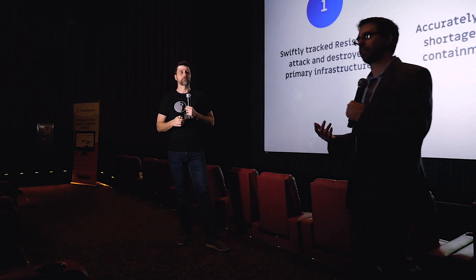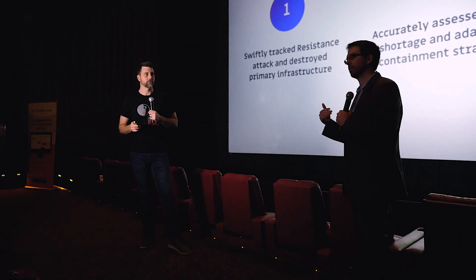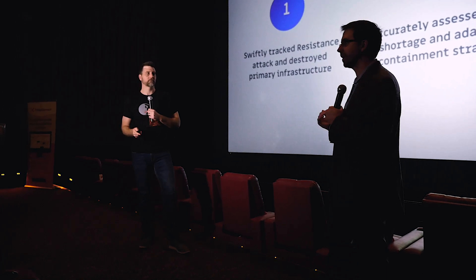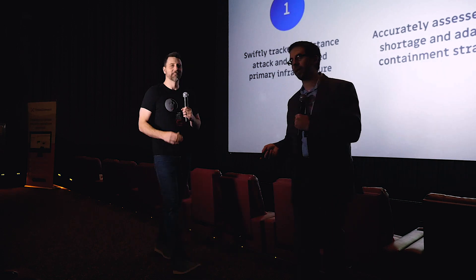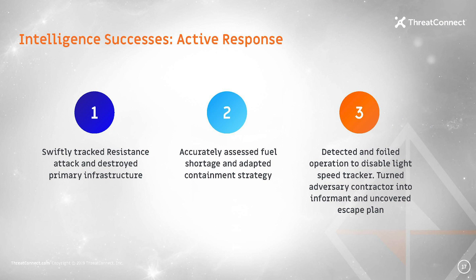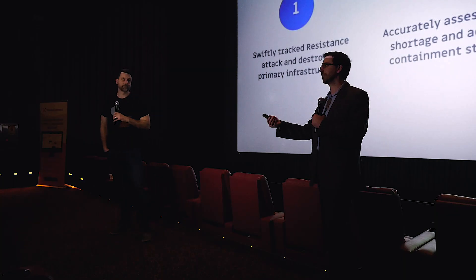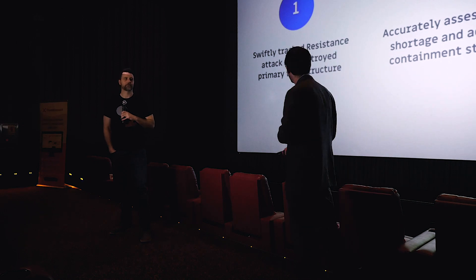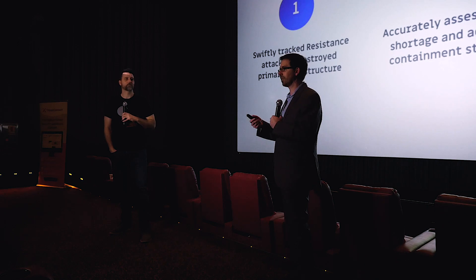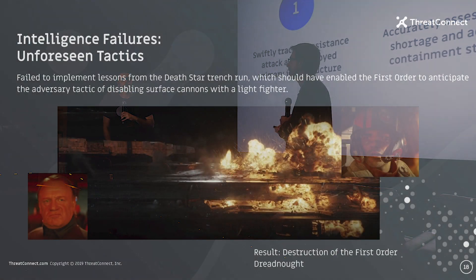Next, the intelligence failures of the First Order. It's an interesting point: as we noted in Episode Four, the Empire didn't have an intelligence failure — they delivered the intelligence to the commander who made the wrong decision based on it. Maybe they didn't deliver it in an impactful manner, but ultimately the intelligence was there. They just failed to make the right decisions. As an Intel analyst or Intel officer, your job is to give information to the commander to let them make a decision. In the case of Episode Eight's First Order, there were actual intelligence failures where they failed to connect the dots.